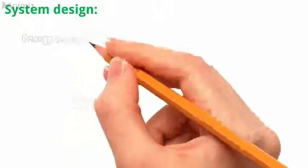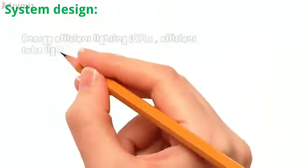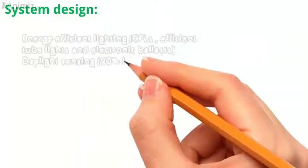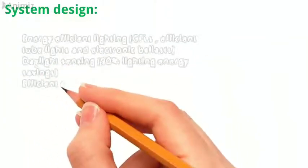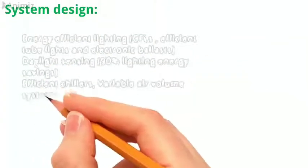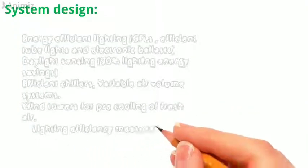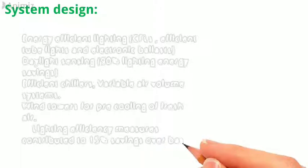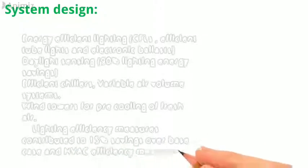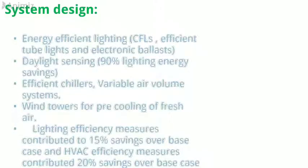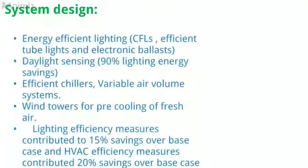Energy-efficient lighting, CFLs, efficient tube lights and electronic ballast, daylight sensing. 90% lighting energy savings. Efficient chillers, variable air volume systems. Wind towers for pre-cooling of fresh air. Lighting efficiency measures contributed to 15% savings over base case and HVAC efficiency measures contributed 20% savings over base case.